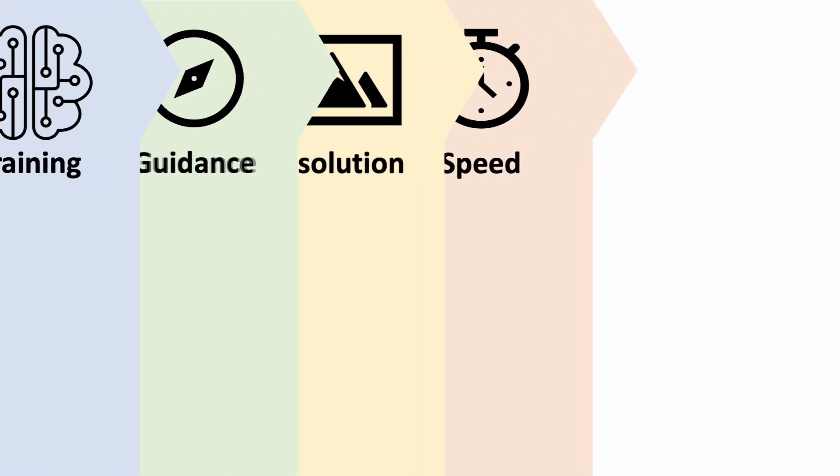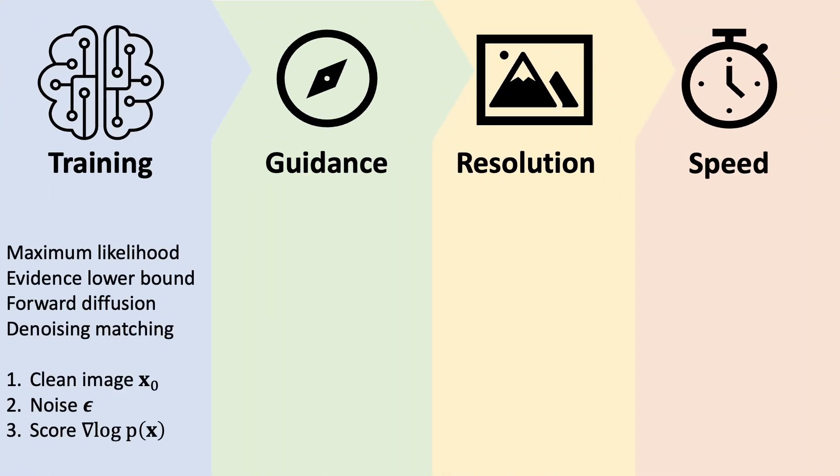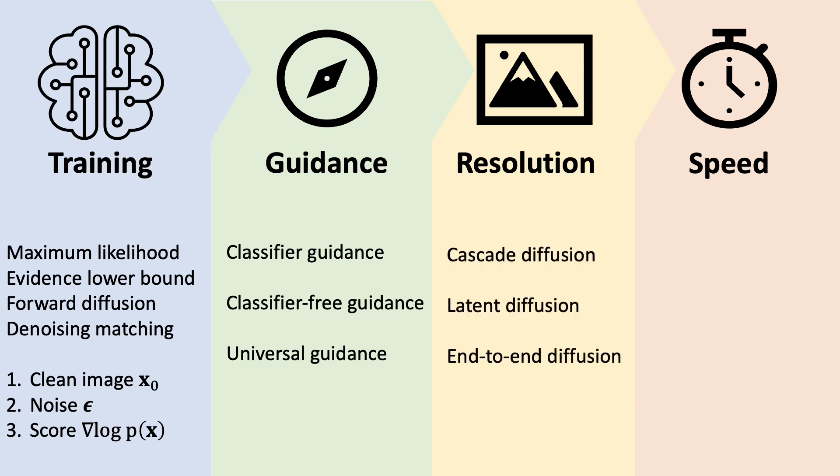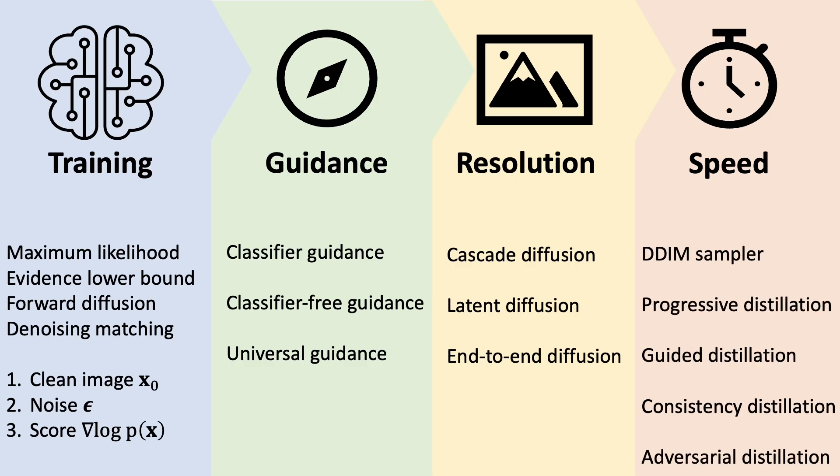To sum up, we covered the training objective for diffusion models and their three interpretations, how we can guide the generation with classifier and classifier-free guidance, how we can synthesize high-resolution images using cascade, latent, and end-to-end diffusion models, and how we can speed up the sampling using DDIM sampler and various distillation techniques.